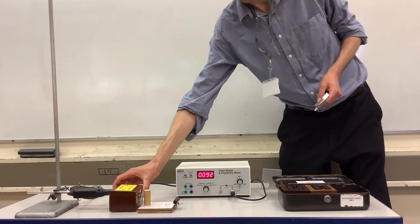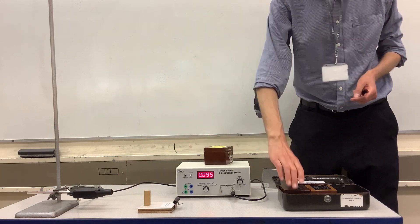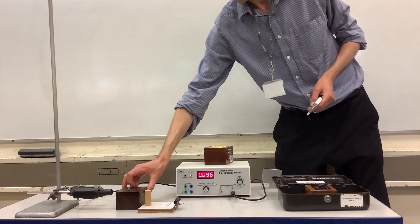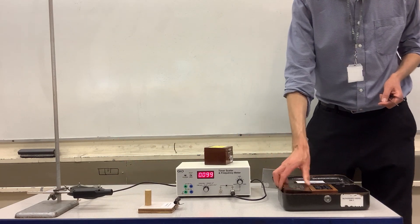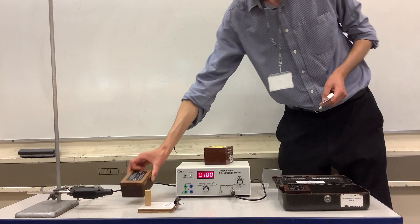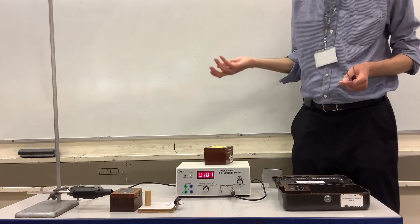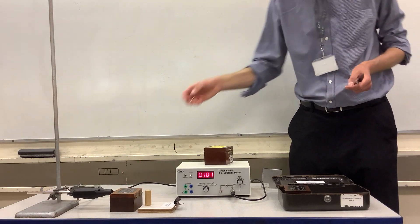Whereas if I put the strontium-90 beta source or the plutonium-239 alpha source, we're not detecting much radiation through the box.